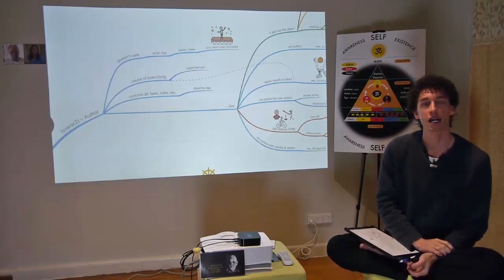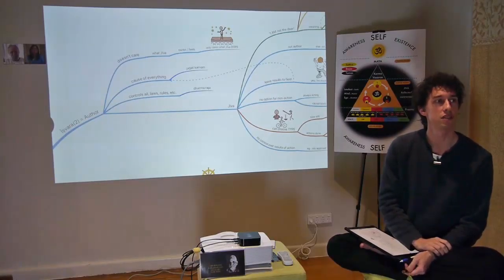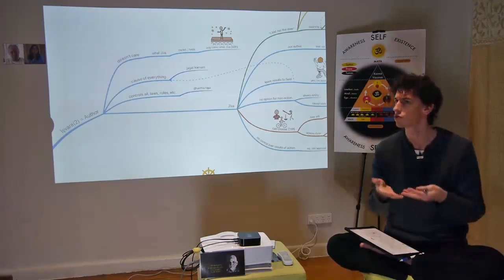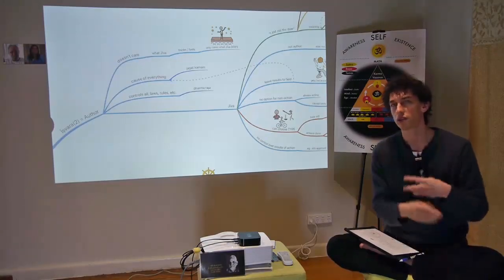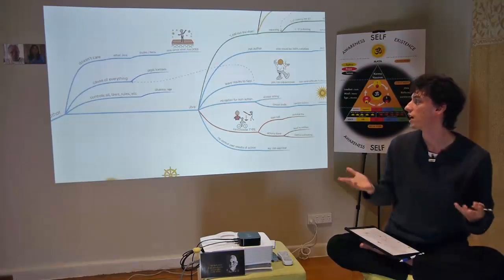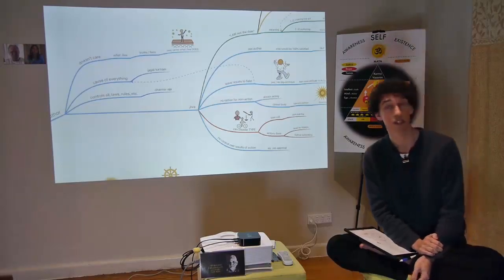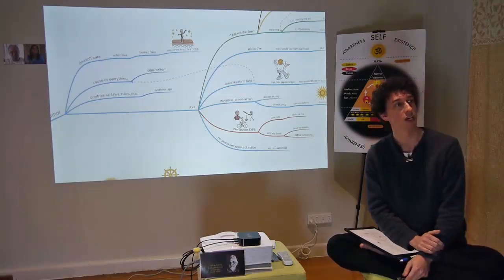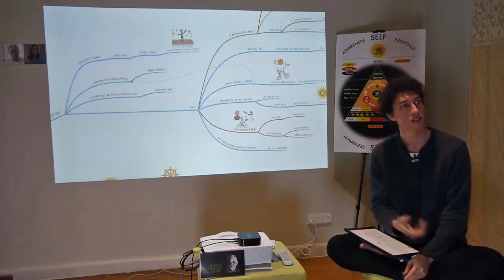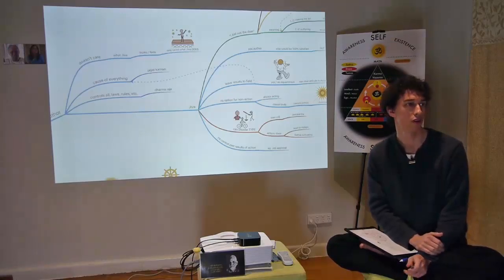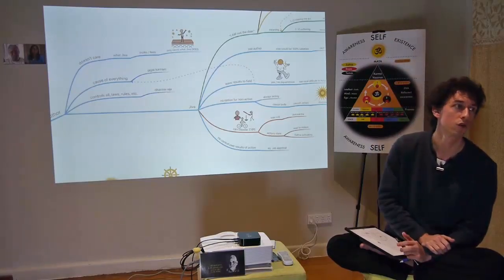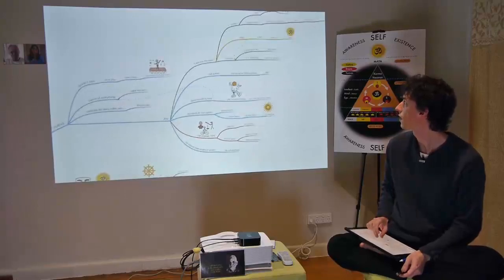Ishwara is the cause of everything — Jagat Karanam. It causes all the rules, all the laws, all the principles of nature. And Dharmaraja means it controls all laws. Ahimsa — non-injury — is built in. That's why we don't like to hurt each other, and why we feel guilty when we do. Ahimsa is part of Samanya Dharma, and where does this come from? From Ishwara, who is Dharmaraja.